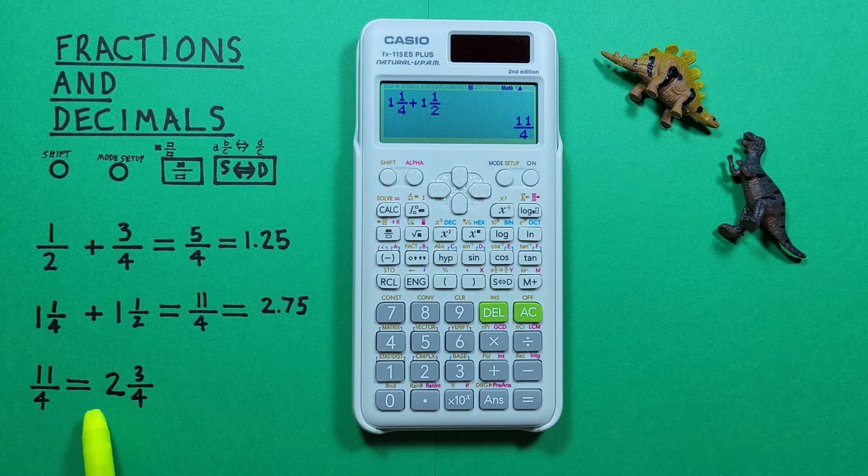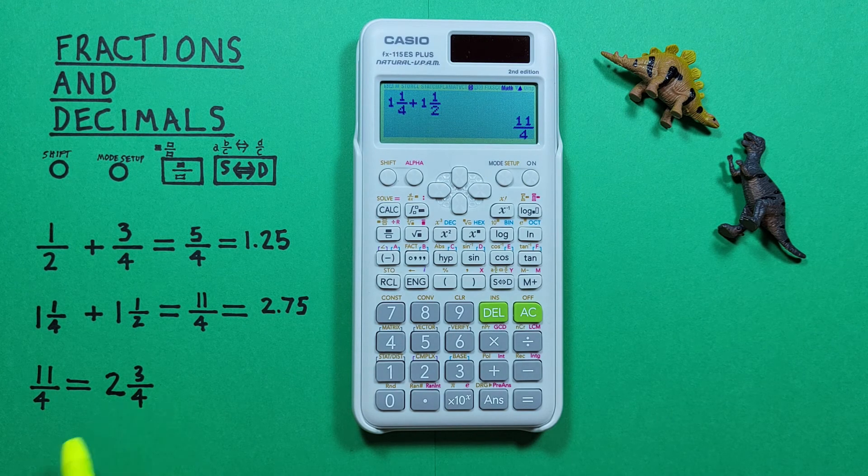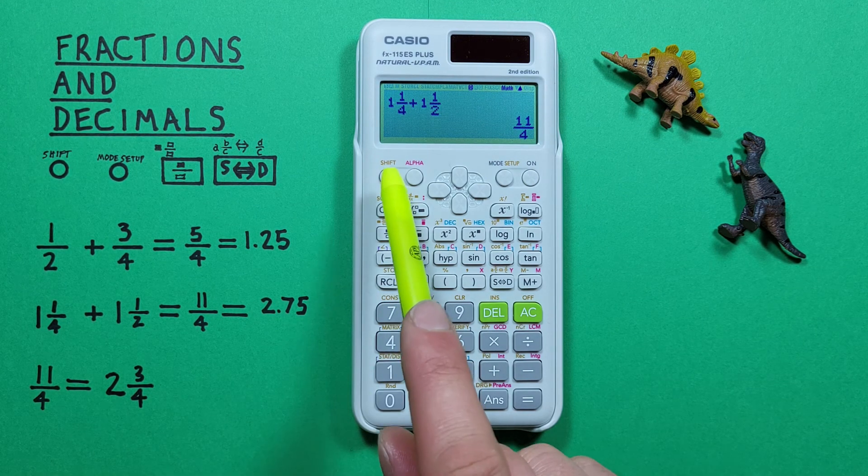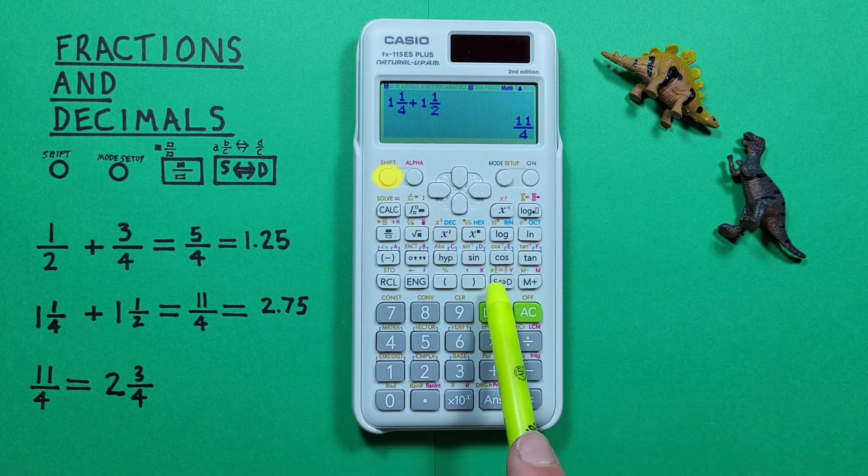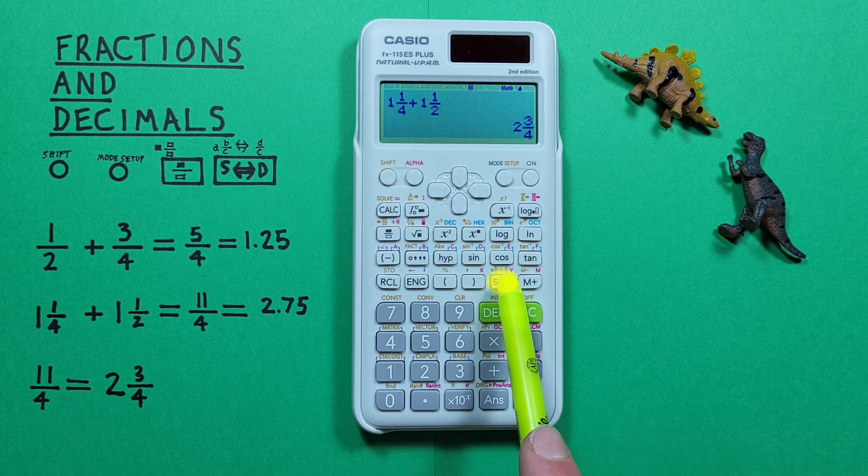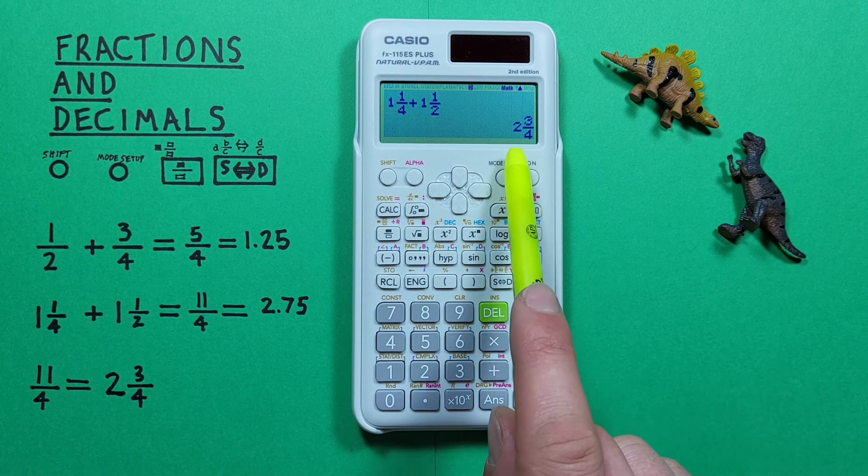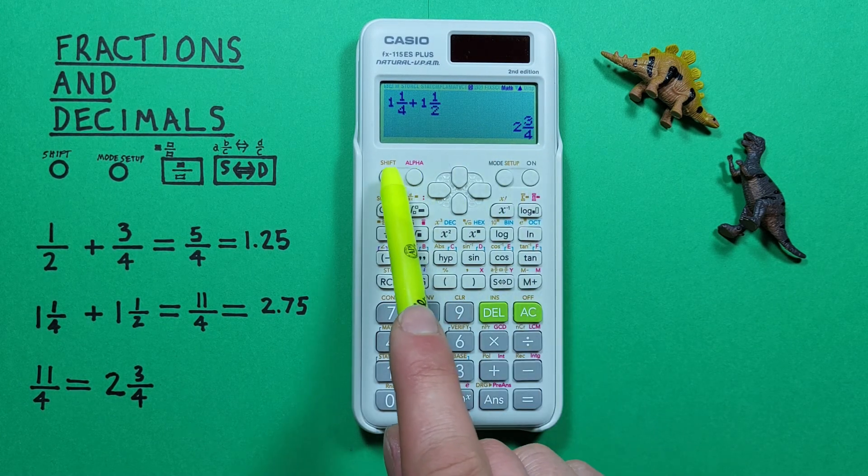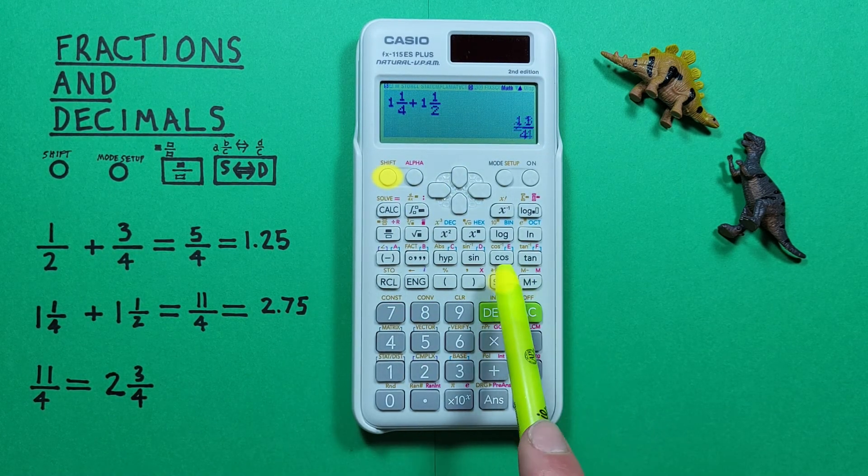But what if we want this result as a mixed fraction? To do that, we can press the shift key and then the S to D. And that converts our fraction from an improper to a mixed fraction, and if we do it again, it converts it back.